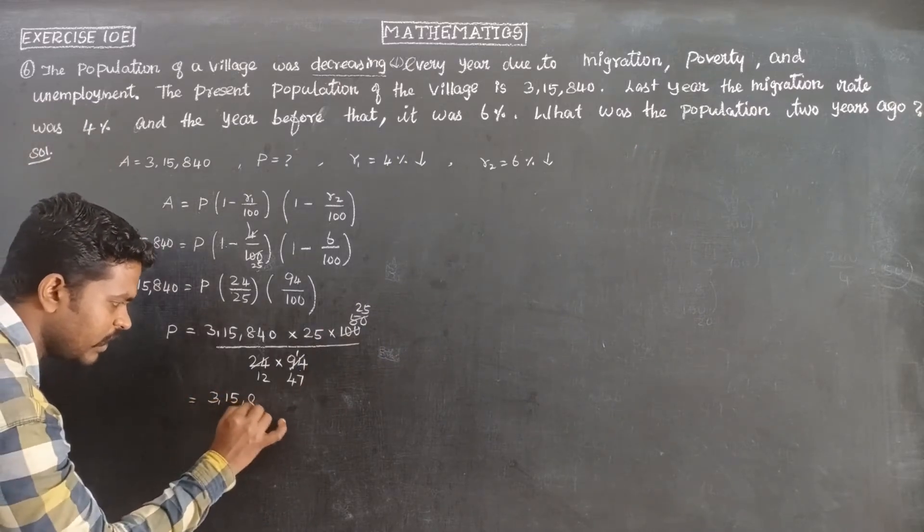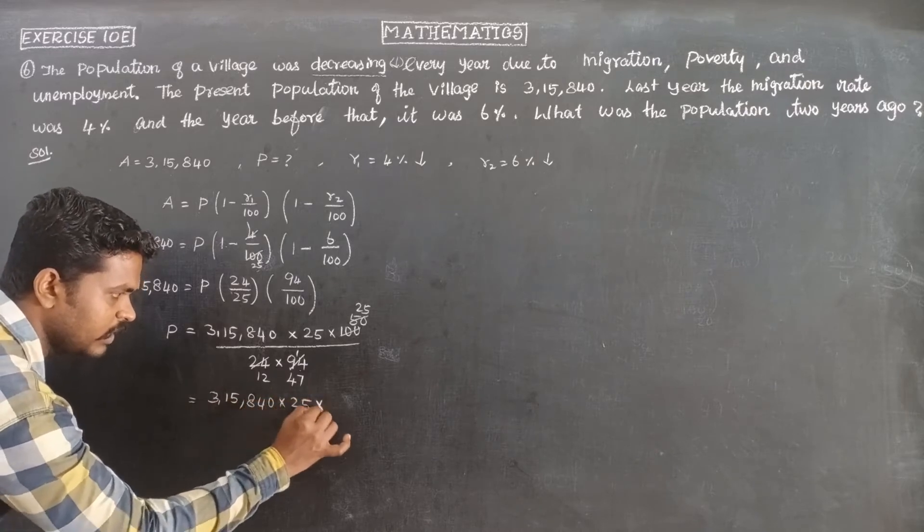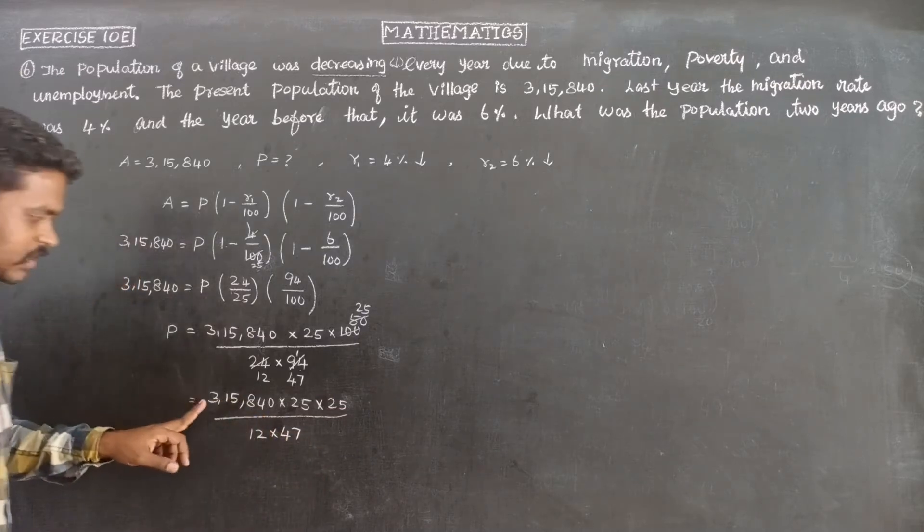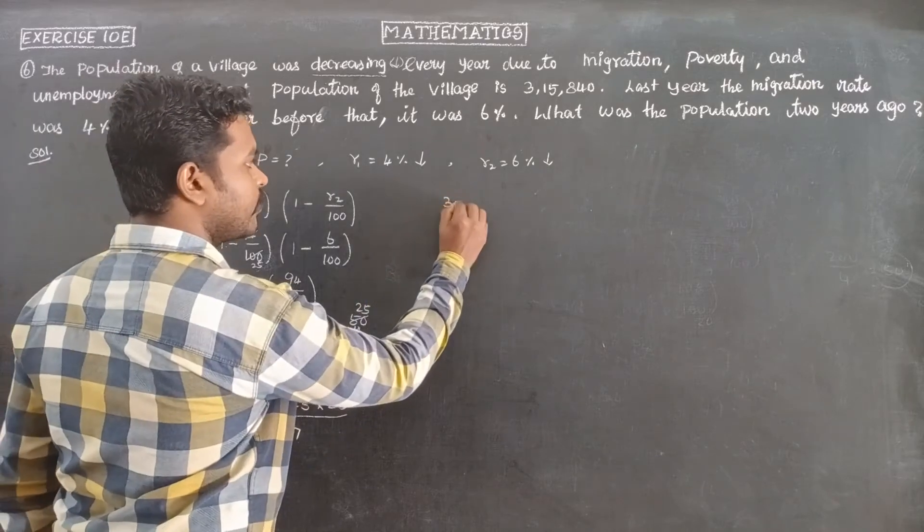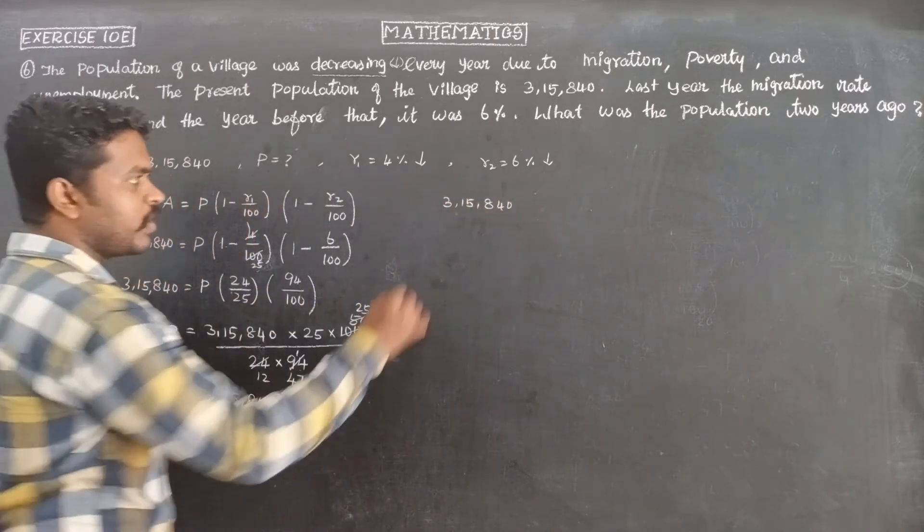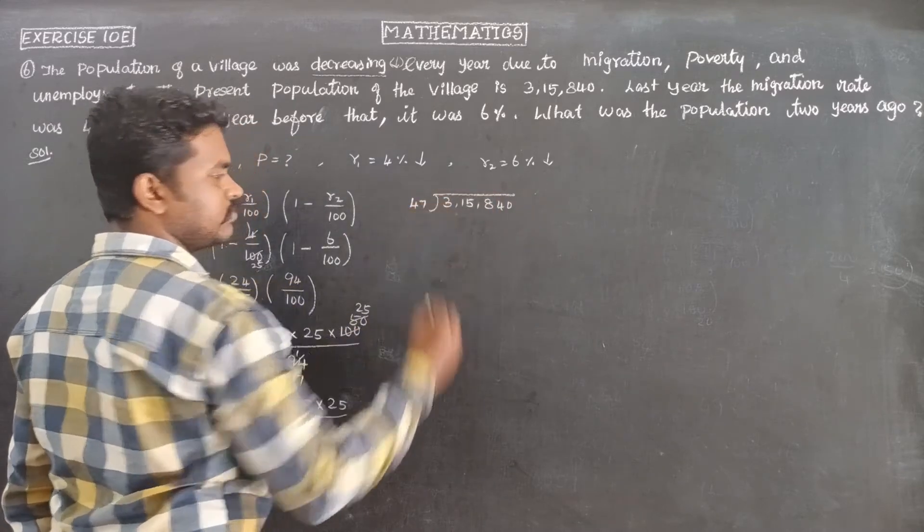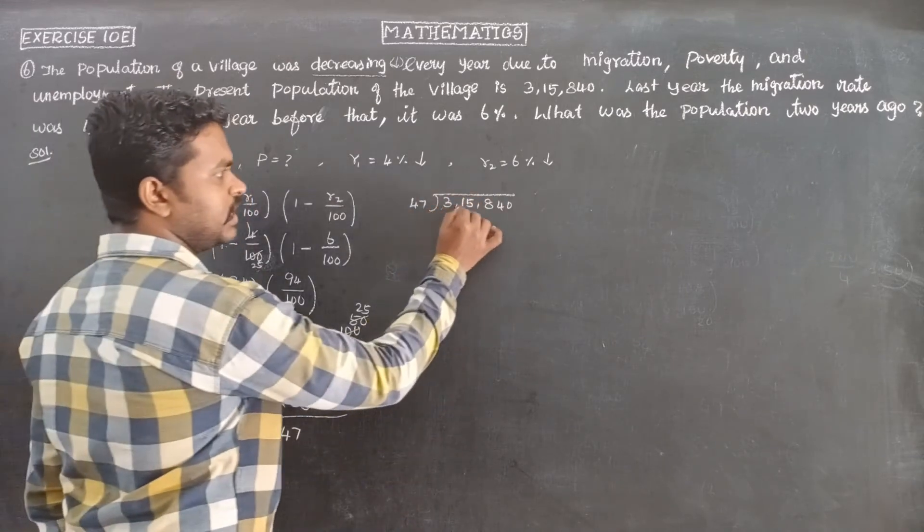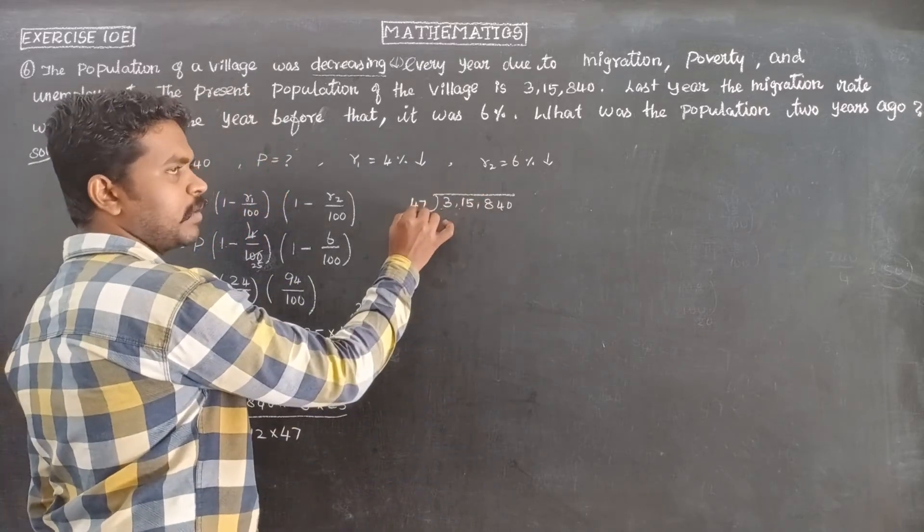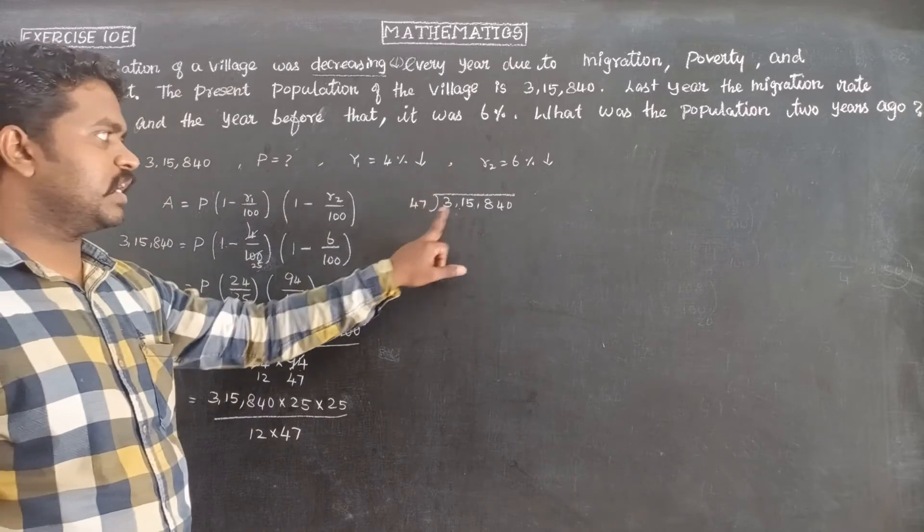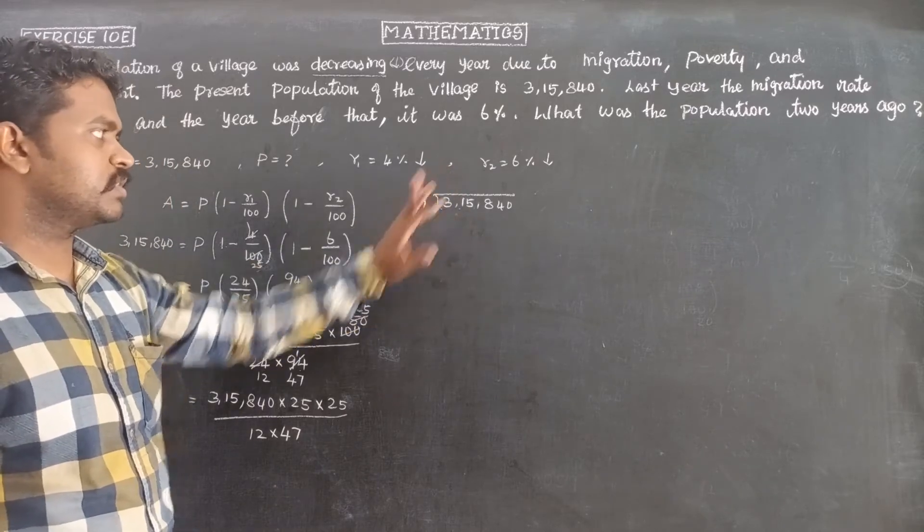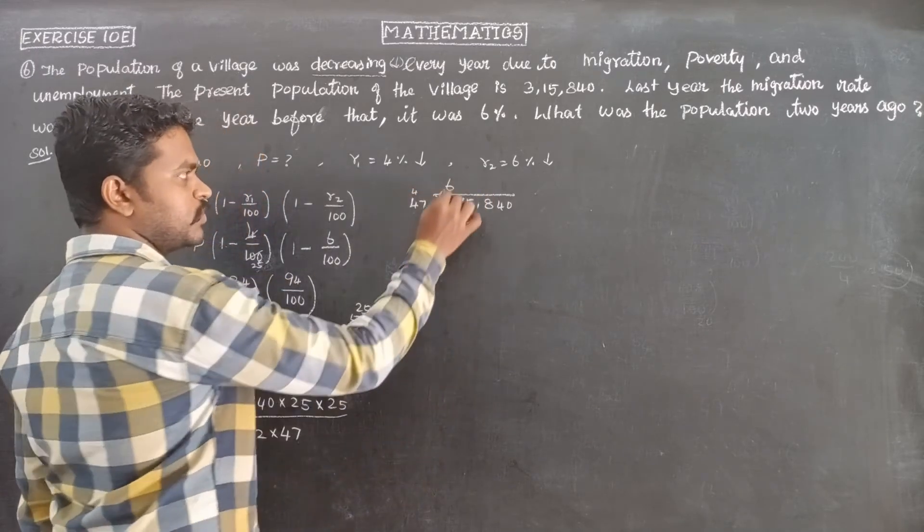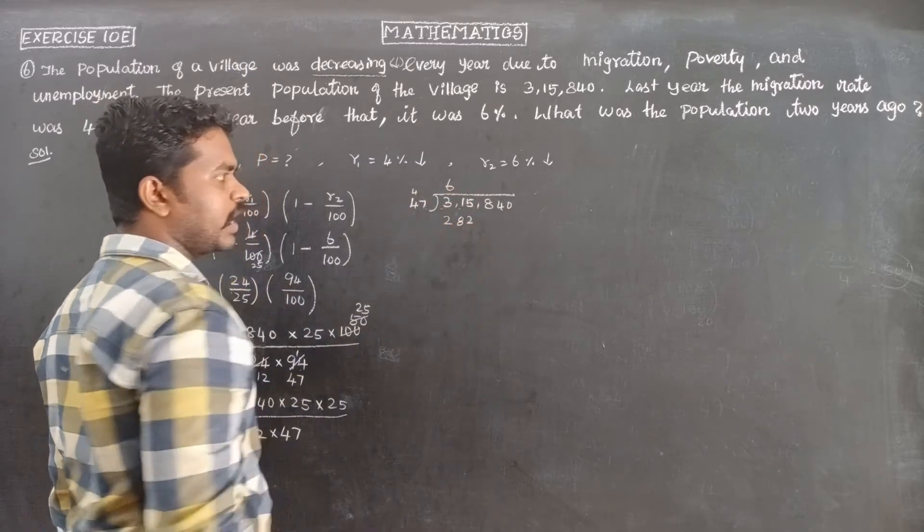So next: 3,15,840 times 625 divided by 12 times 47. We need to divide 3,15,840 by 47. Let me check: 3 divided by 31, then 350. So 6 times works - 7 times 42 is 42, remaining 4. Then 7 times 4 is 28.